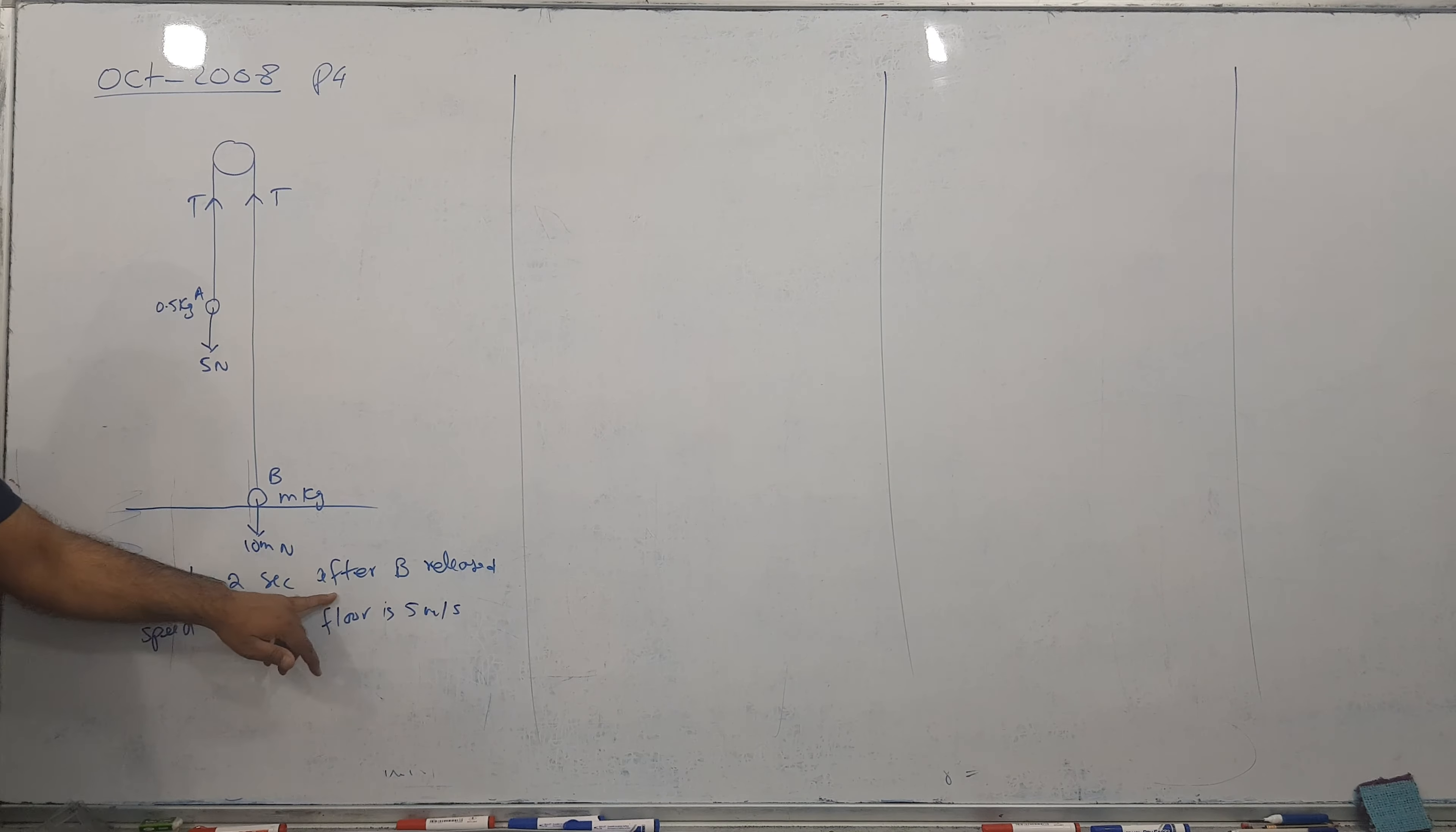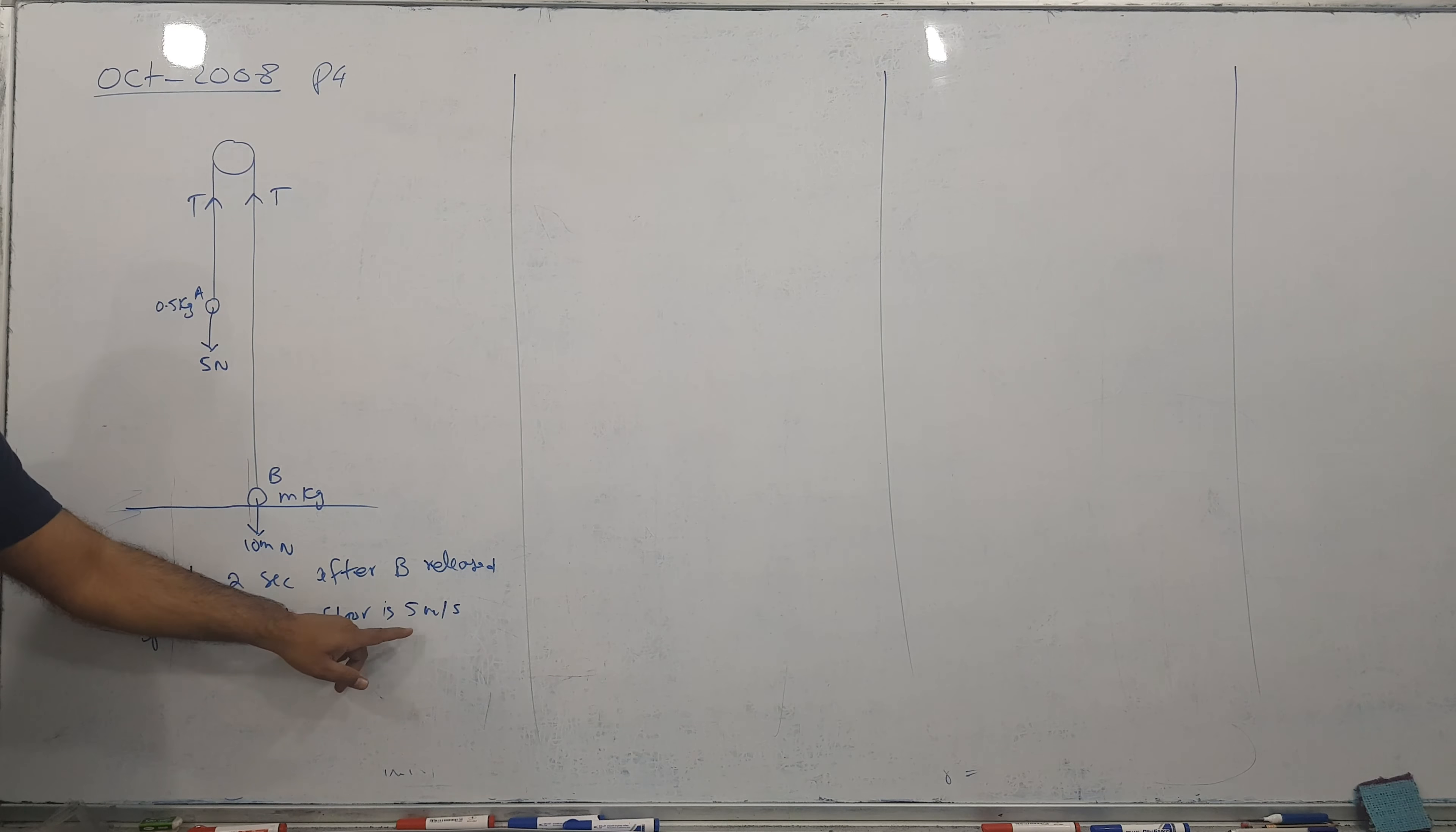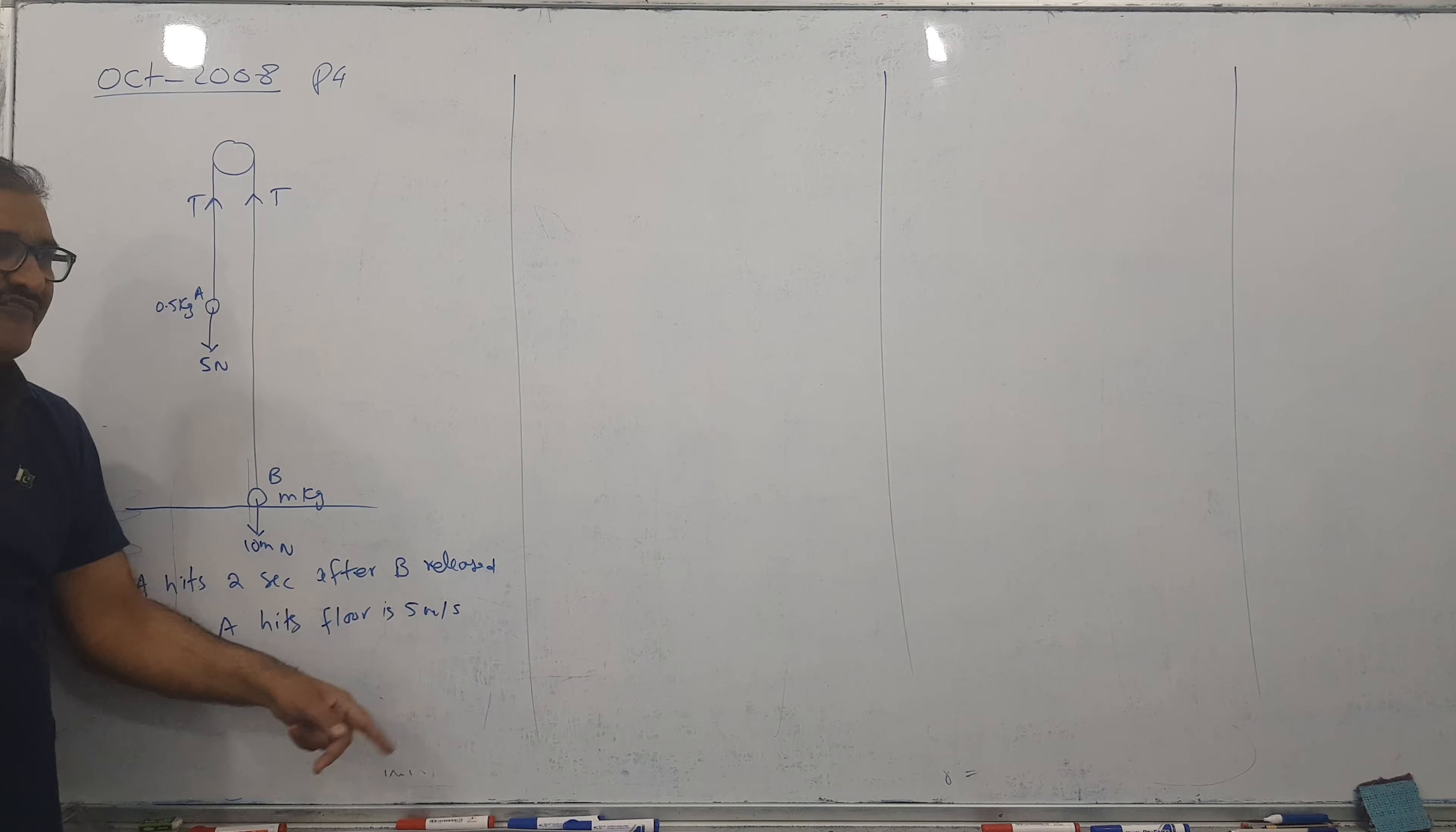A hits 2 seconds after B released. When we release the particle at B, it will fall down and hit the ground 2 seconds after and the speed is 5.